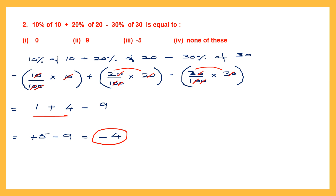Now looking at the options, we don't have minus 4 anywhere. First option is zero, second is nine, third is minus five, fourth is none of these. So our answer is the fourth option: none of these.